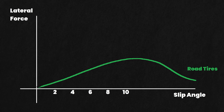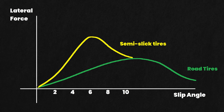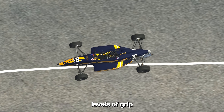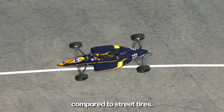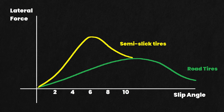Semi-slicks or competition tires, designed for track days and high-performance driving, have their optimal slip angle at around 5 to 7 degrees. They have stiffer sidewalls and softer compounds, and generate higher levels of grip at lower slip angles compared to street tires. However, when you go past the optimal slip angle on these tires, there's a faster drop in grip compared to street tires, which demands more precise control.